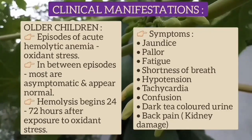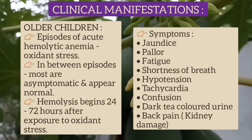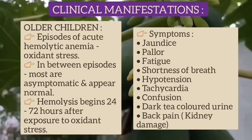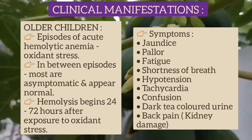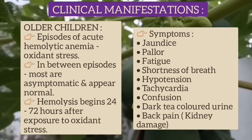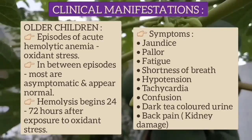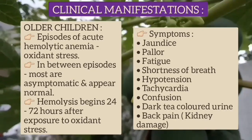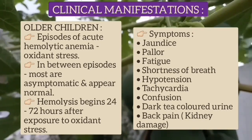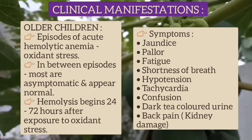In older children, episodes of acute hemolytic anemia occur due to oxidant stress induced by exposure to certain drugs or chemicals, infections, ketoacidosis, or ingestion of fava beans or certain foods. Most children are asymptomatic and appear normal between episodes. Hemolysis begins 24 to 72 hours after exposure to oxidant stress, and symptoms include anemia, jaundice, fatigue, shortness of breath, hypotension, tachycardia, confusion, or in severe cases, dark-colored urine and back pain.